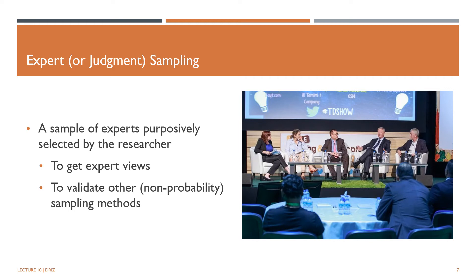Expert sampling is where you draw your sample from a panel of experts in the field you are studying. It is used when you need the opinions or assessment of people with a high degree of knowledge or demonstrable experience in the study area. When used in this way, expert sampling is a subtype of purposive sampling. Another reason to use experts is to validate another non-probabilistic sampling method. For instance, the researcher used quota sampling and is concerned that the criteria used for defining the quotas are subject to criticisms. So the researcher might convene an expert panel consisting of people with acknowledged experience and insight into the topic and ask them to examine his quota criteria and comment on their appropriateness and validity.